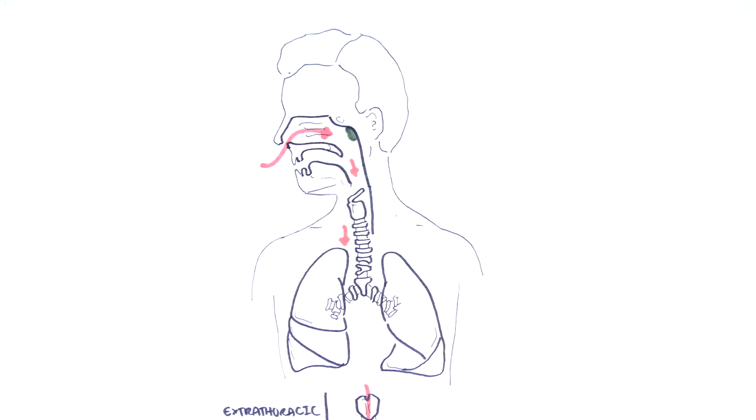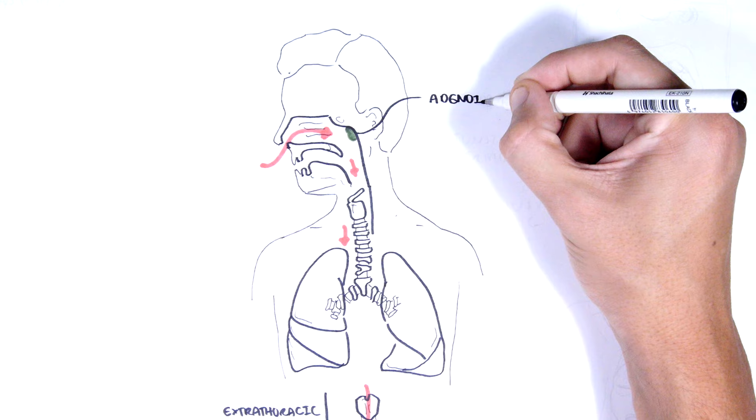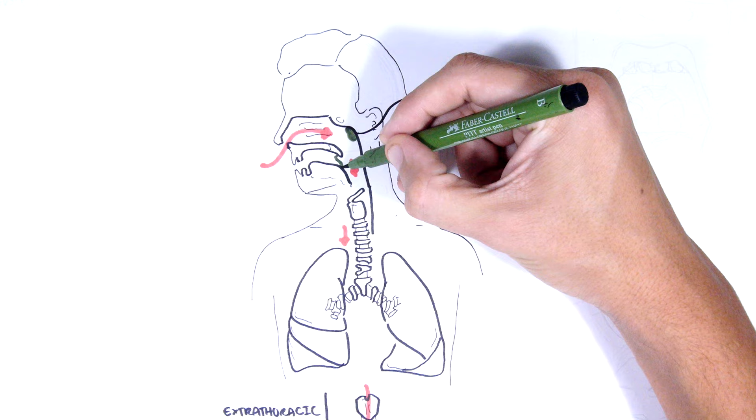Let's focus on the extrathoracic causes of stridor. Adenoids are lymphatic tissue that can become enlarged during an infection. Hypertrophy of the adenoids means potentially obstructing the airway, causing turbulent airflow and stridor.